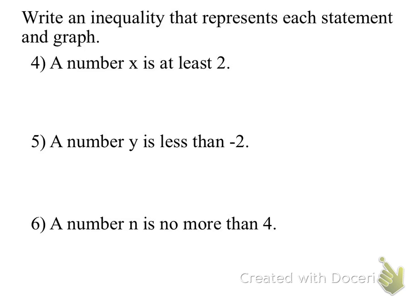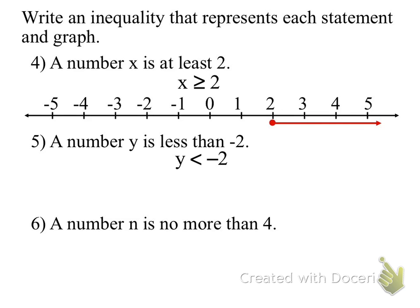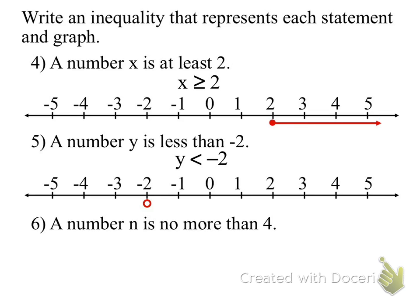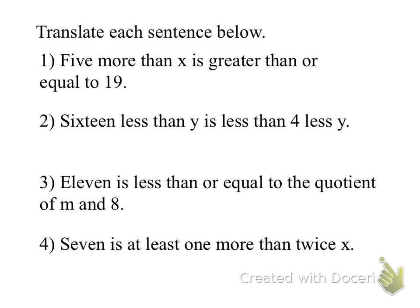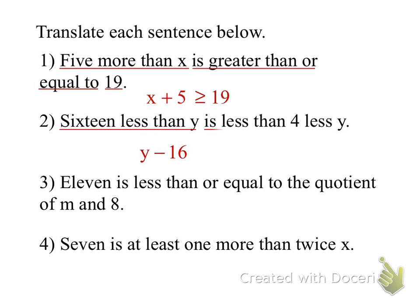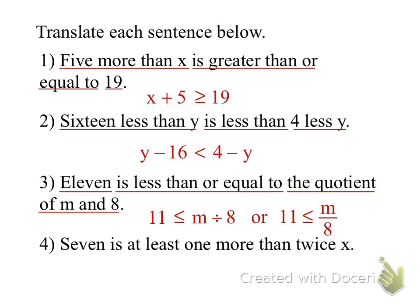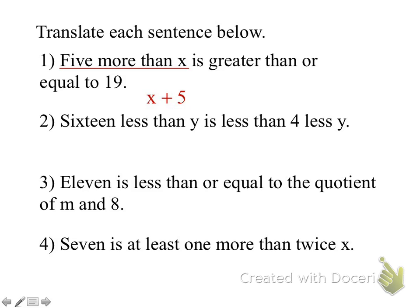'A number X is at least...' Do you want to pause it and do the problems on your own? Now let's check our answers. A number X is at least two — Elizabeth? X is greater than or equal to two. A number Y is less than negative two — Dylan? Y is less than negative two. A number N is no more — Alex? N is less than or equal to four. Perfect.